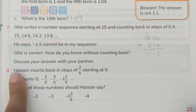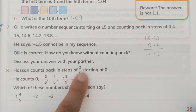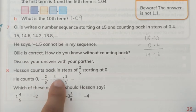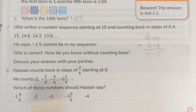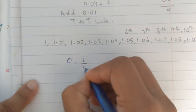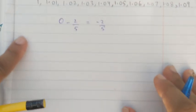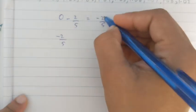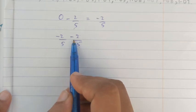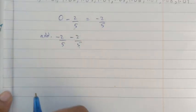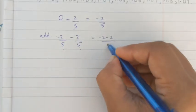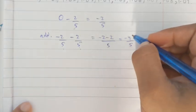Question 8: Hassan counts back in steps of 2/5, starting at 0. 0 minus 2/5 is minus 2/5. Now when we subtract 2/5 from minus 2/5, both are negative so we add them: minus 2/5 minus 2/5 equals minus 4/5. The denominators are the same so we add the numerators, giving minus 4/5.